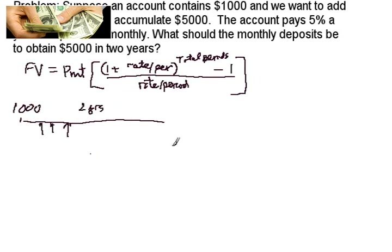Now, there's a couple ways to do this. The problem is a little more complicated because we have this additional $1,000. If we just had nothing here to start with, then we could go to this formula and say, okay, we wanted $5,000.